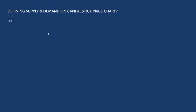One of the things we need to do is define supply and demand on a candlestick price chart. I spoke about rally-base-drop and drop-base-rally, but that doesn't really tell me much. What makes sense to me is higher highs and higher lows, and lower highs and lower lows.